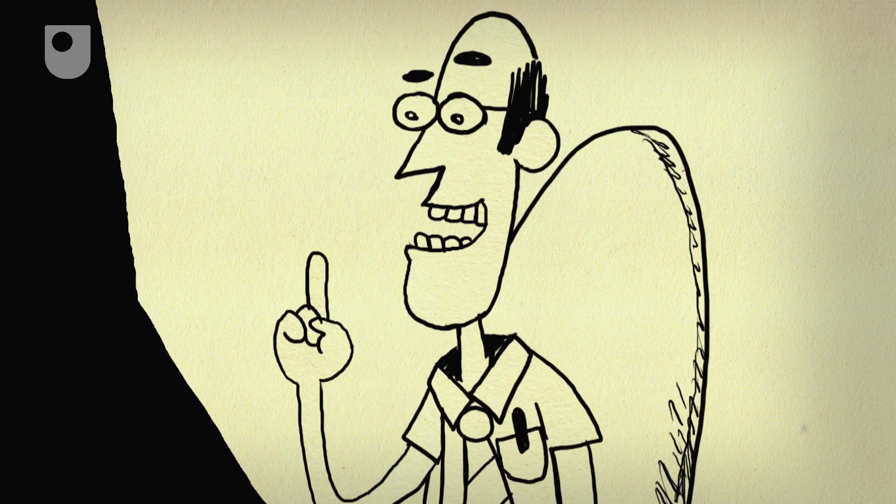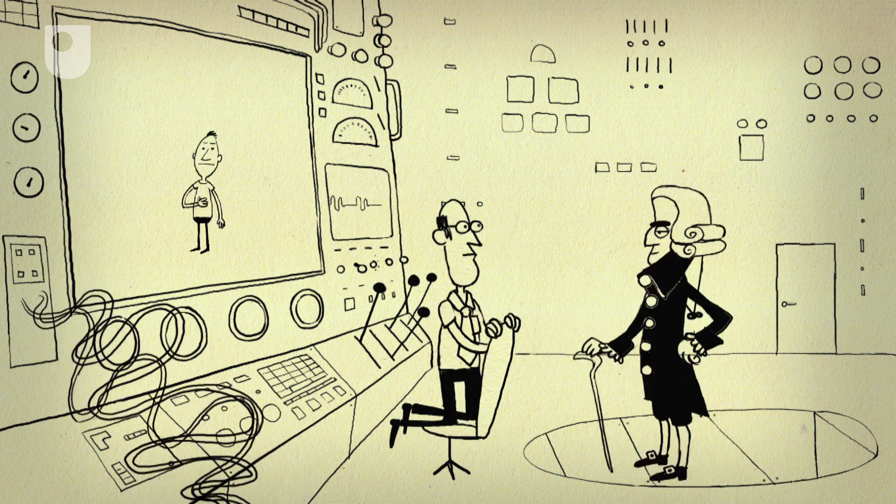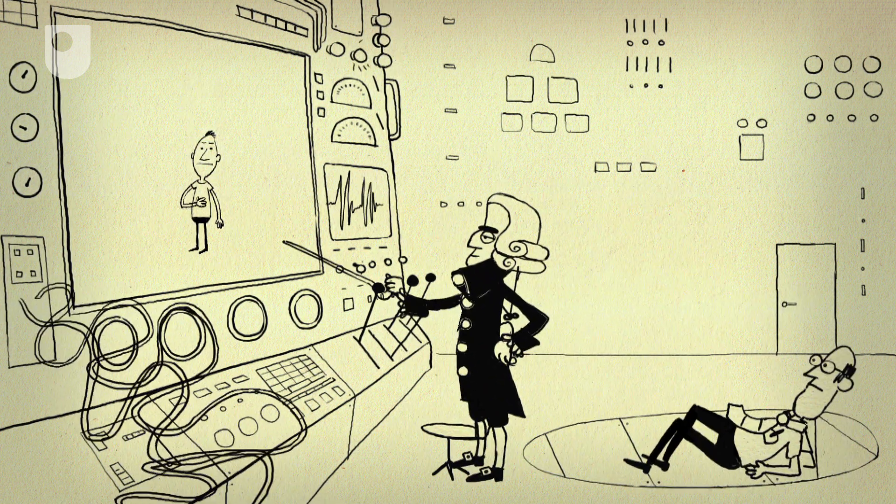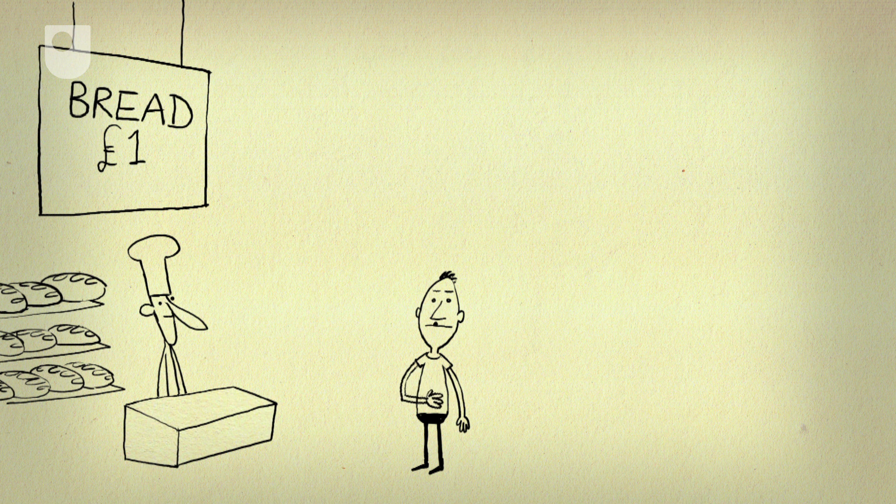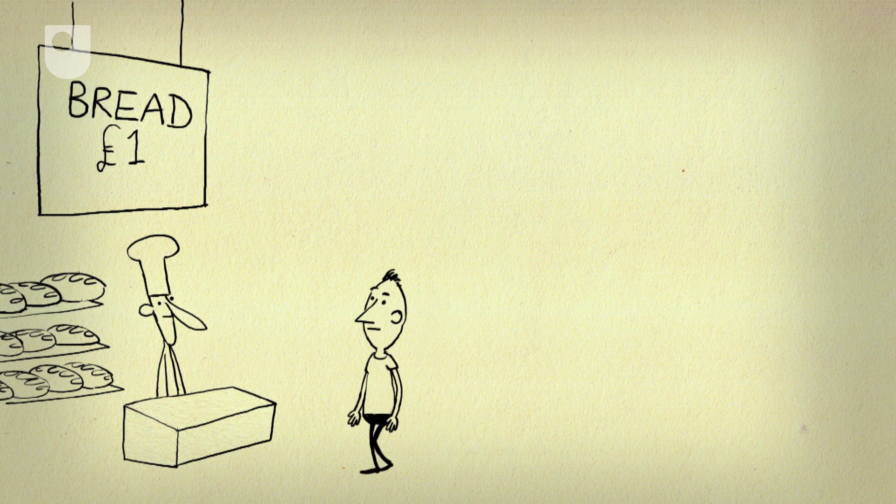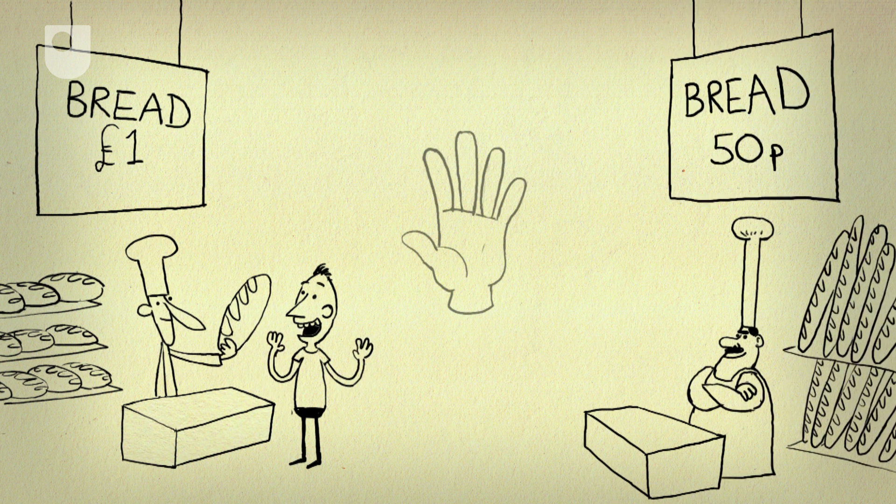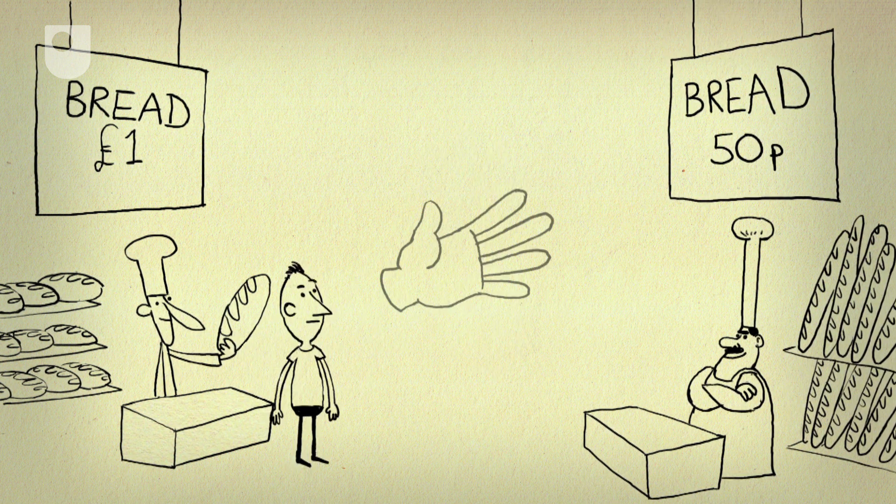Back in 1776, economist Adam Smith shocked everyone by saying that what governments should actually do is just leave people alone to buy and sell freely among themselves. He suggested that if they just leave self-interested traders to compete with one another, markets are guided to positive outcomes, as if by an invisible hand.